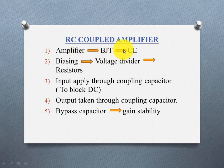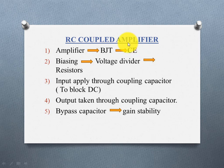BJT has three configurations: Common Emitter, Common Base, and Common Collector. Common Emitter is the most important configuration because the basic requirement is high gain. Common Emitter is a high gain amplifier, providing higher gain compared to the other configurations.